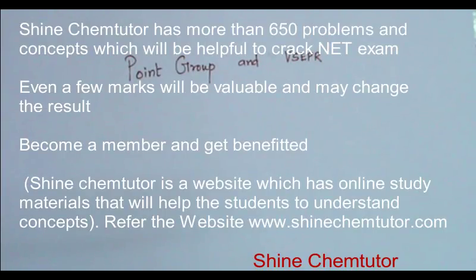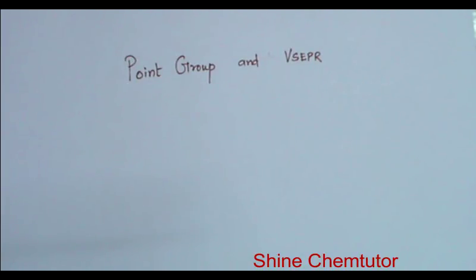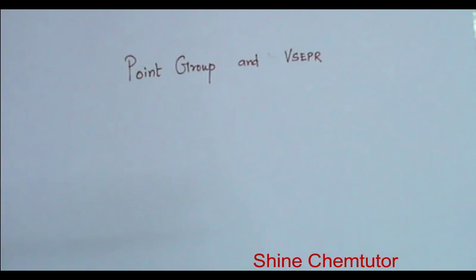In this video, we are going to discuss assigning point groups for compounds using valence shell electron pair repulsion theory. Very often in competitive exams, they give a molecule and ask for the point group of that. In order to predict the point group, first you should know the structure of that compound. To predict the structure, we use valence shell electron pair repulsion theory.